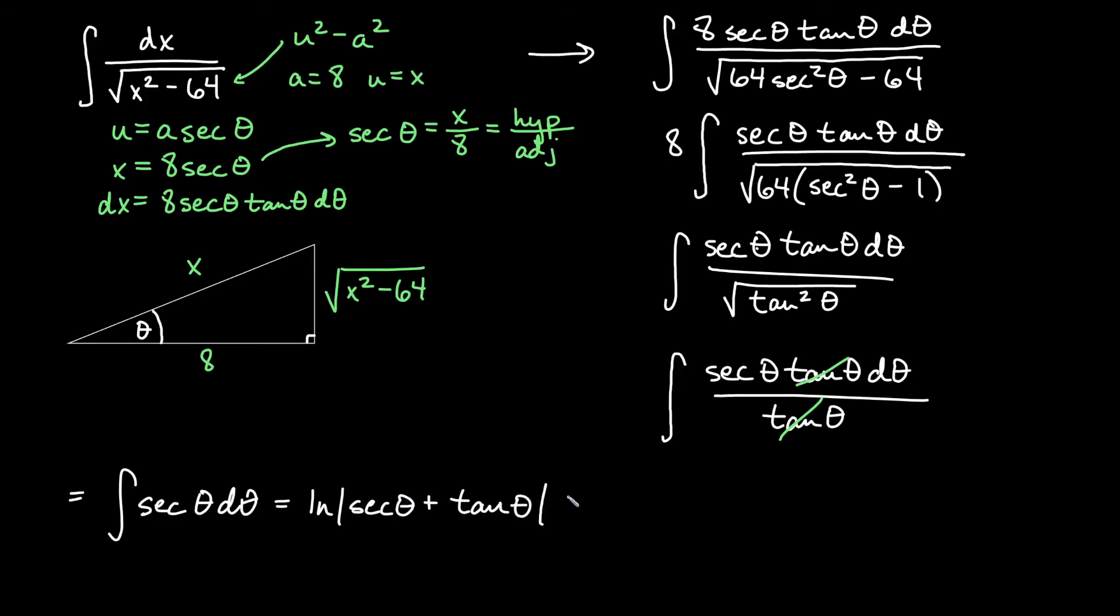And now we just simply need to replace our secant and our tangent terms back in terms of x. You'll notice right away our original substitution that we had up here secant theta is equal to x over 8. So this one here is actually just going to be x over 8.